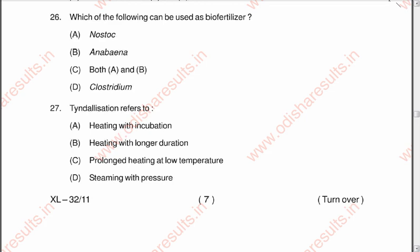Question number 26: Which of the following can be used as a biofertilizer? Options are A Nostoc, B Anabaena, C both A and B, D Clostridium. The correct answer is C, both A and B — Nostoc and Anabaena.